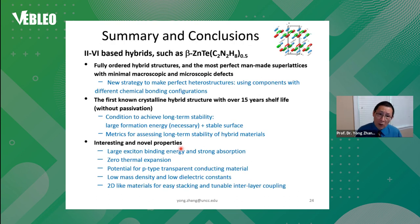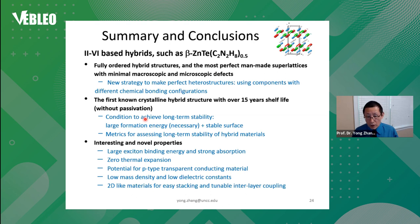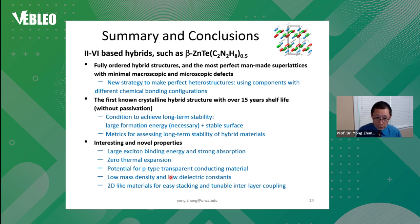Here's a summary: based on this study on 2-6 hybrids, we have shown that fully ordered hybrid structures can be considered the most perfect man-made superlattices, with minimal macroscopic and microscopic defects. This gives us a new strategy to make perfect heterostructures. This is also the first known crystalline hybrid structure with such a long lifetime even without any preservation, giving us understanding of what conditions lead to long-term stability: large formation energy plus a stable surface. These materials also have a number of interesting properties for future applications.